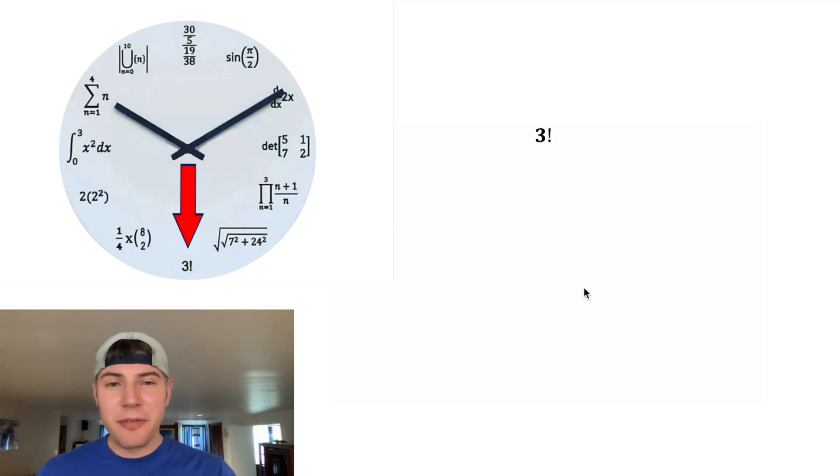Next, we have 3 factorial. Well, 3 factorial means 3×2×1, and 3×2×1 is equal to 6, and that's why this is at the six o'clock hour.